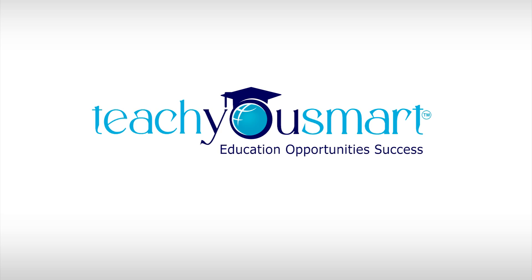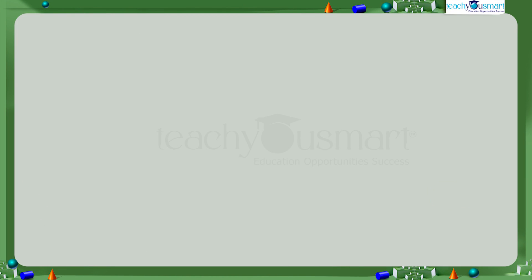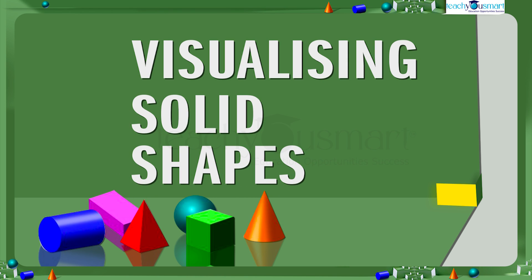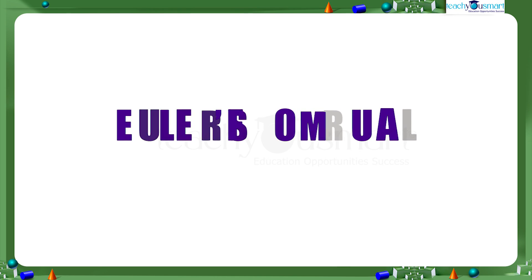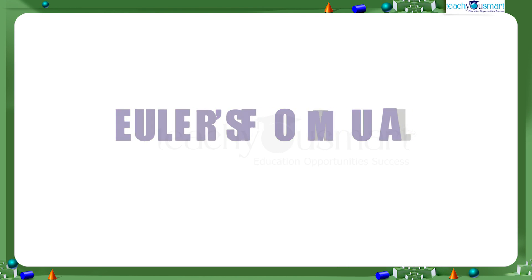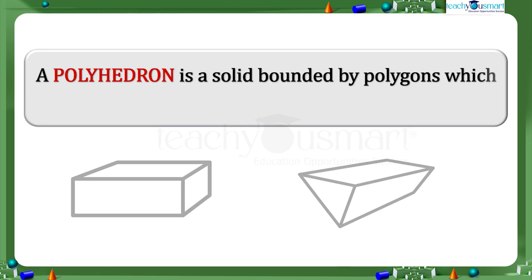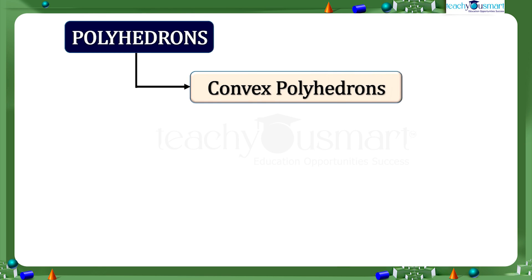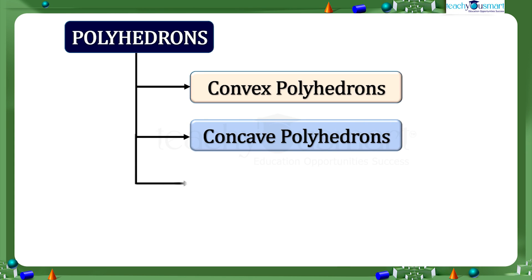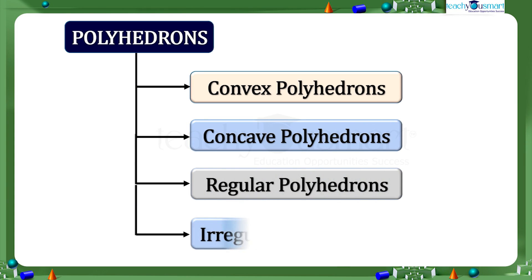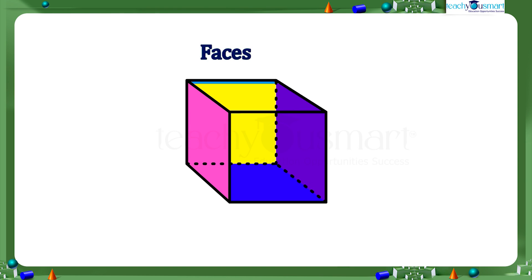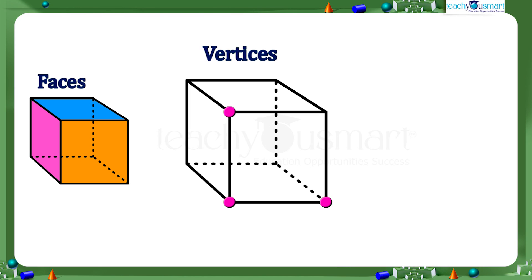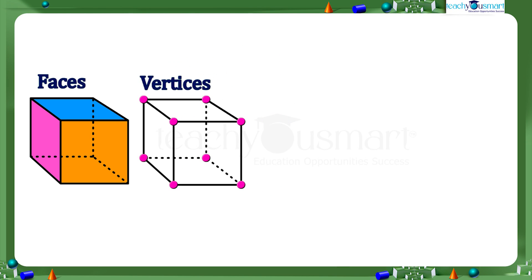Hello students, welcome to Teach You Smart. Let's continue our journey through visualizing solid shapes. Today we are going to discuss Euler's formula. In our previous session we have seen that a polyhedron is a solid bounded by polygons, which are closed figures with three or more straight sides. Let's recall the classification of polyhedrons: convex polyhedrons, concave polyhedrons, regular polyhedrons, and irregular polyhedrons.